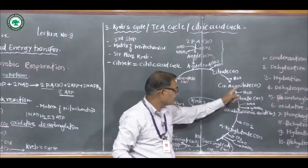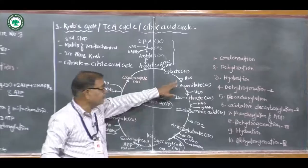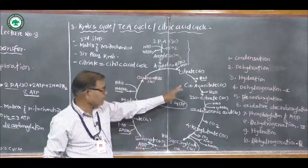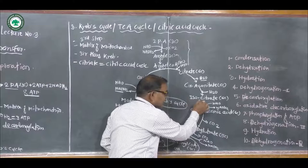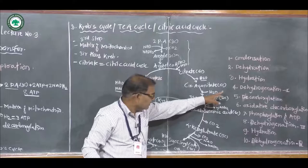In the second step, citrate removes a water molecule by dehydration to form cis-aconitate. In the next step, cis-aconitate (a six-carbon compound) undergoes oxidation by addition of a water molecule to form isocitrate. This is called dehydrogenation.